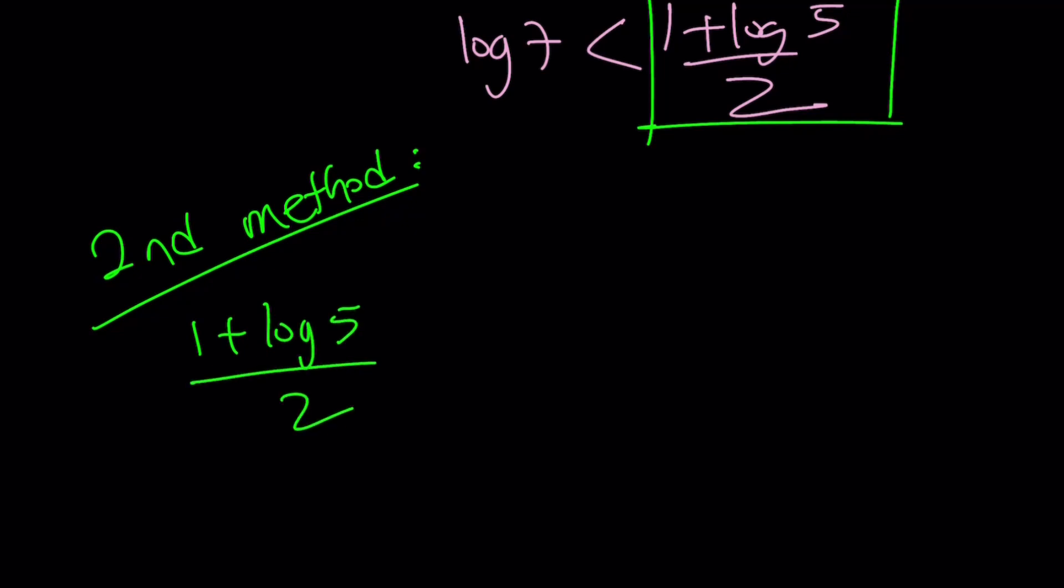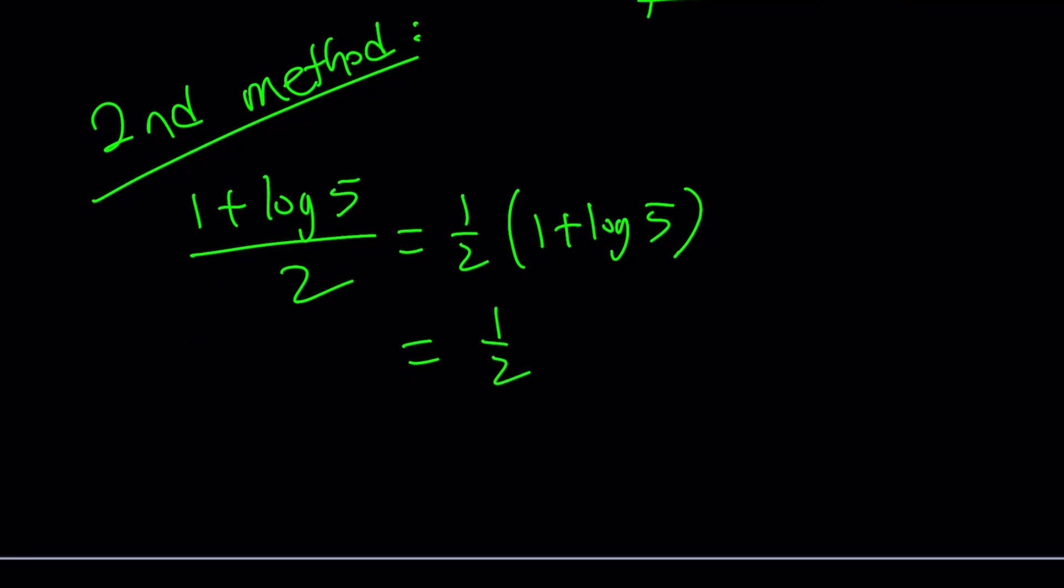1 plus log 5 over 2. So we can kind of write it as 1 half times 1 plus log 5. And then kind of distribute the 1 half as write it as 1 half plus 1 half log 5.